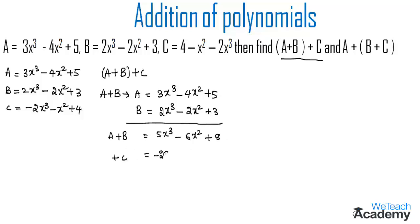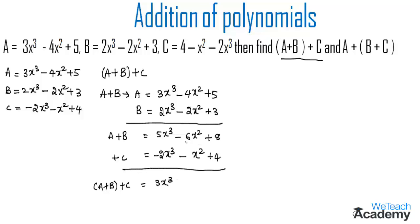Now we add expression C, which is -2x³ - x² + 4. Adding to A+B: 5x³ - 2x³ = 3x³, -6x² - x² = -7x², and 8 + 4 = 12. So (A+B)+C = 3x³ - 7x² + 12.